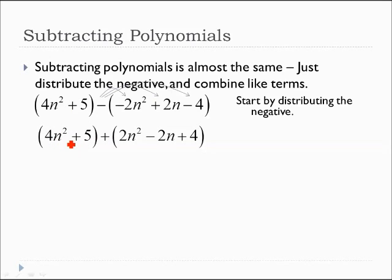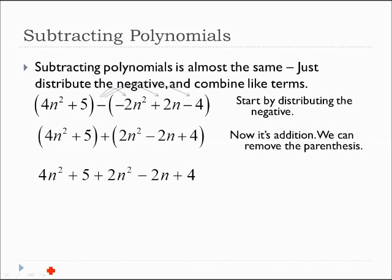Notice that the first part doesn't change. The negative gets distributed to the minus 2n, which makes it positive. The negative gets distributed to that one, which makes it negative. And then it gets to the negative, which makes it positive. Now that changed the sign to a plus. Now this is exactly like the problem we just looked at. Cake, right? So now all you do is remove the parentheses and combine the like terms.